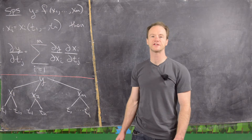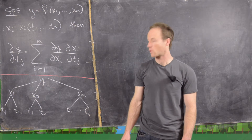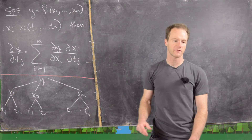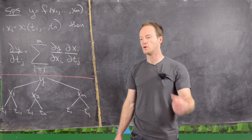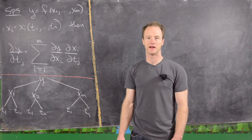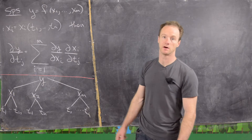In this video we're going to look at a formulation of the chain rule for functions of more than one variable. Here I've written it out all properly, but we'll look at some smaller examples that make this a lot easier to follow.